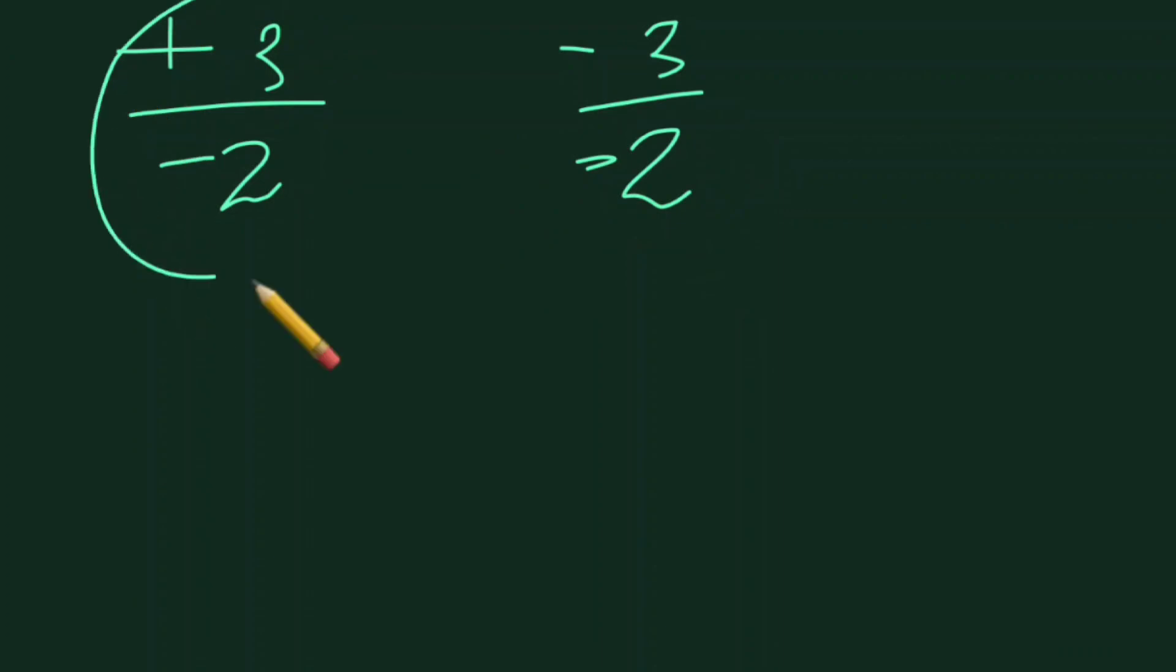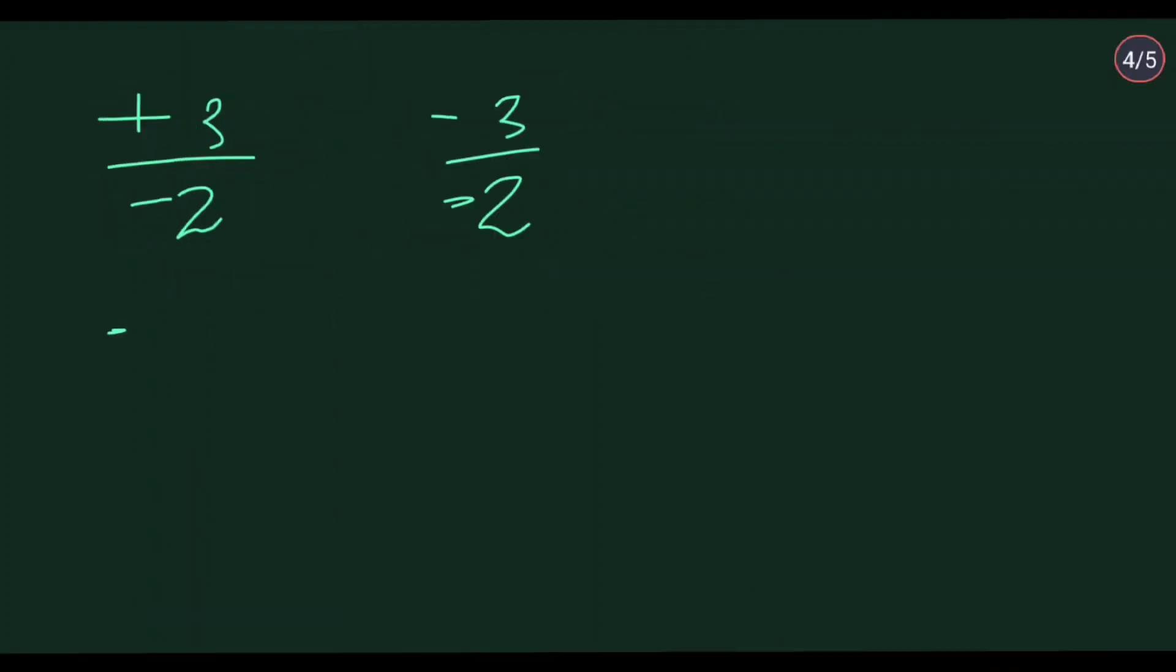That is plus 3 by minus 2, or minus 3 by minus 2, which ultimately becomes minus 3 by 2 and this is 3 by 2. So these are the 2 values which you get after solving this question.